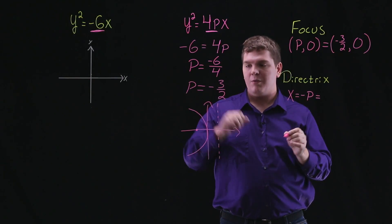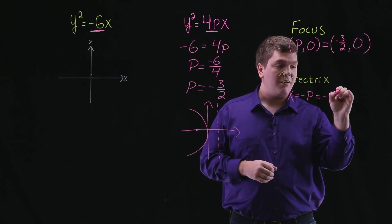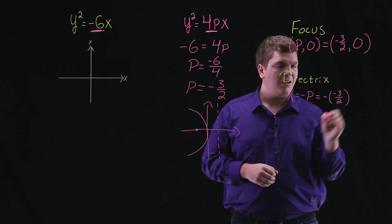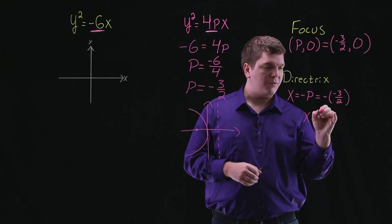Since p was -3/2, -p is 3/2, which tells us that our directrix is the line x = 3/2.